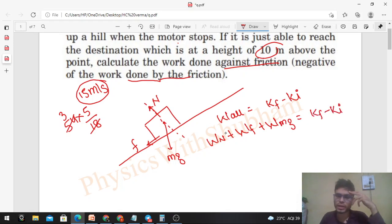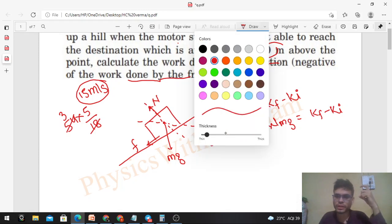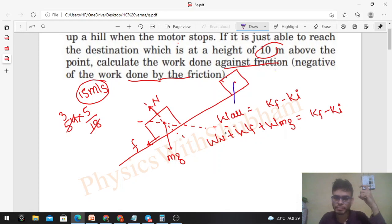Now let's talk about your final position. From this point, the car attains a height of 10 meters. After attaining a height of 10 meters, it finally stops after reaching its destination. It was just able to reach its destination 10 meters above the point where the motor stops, so at a height of 10 meters.